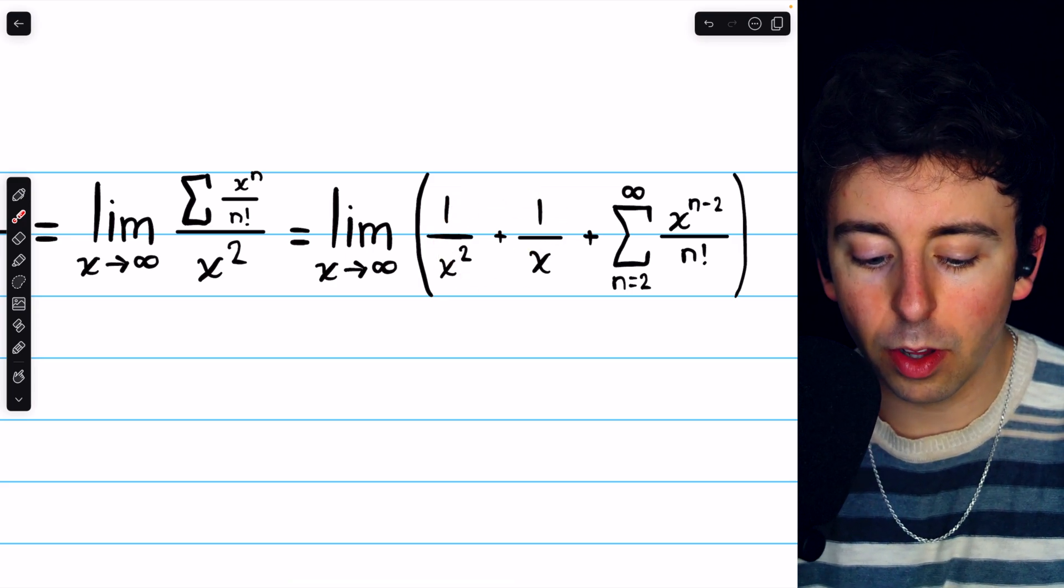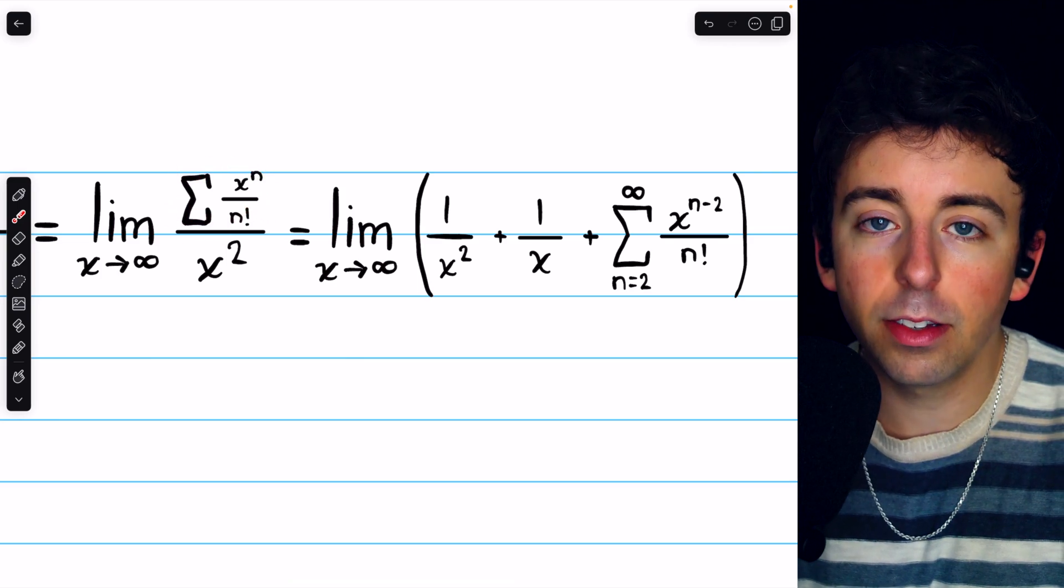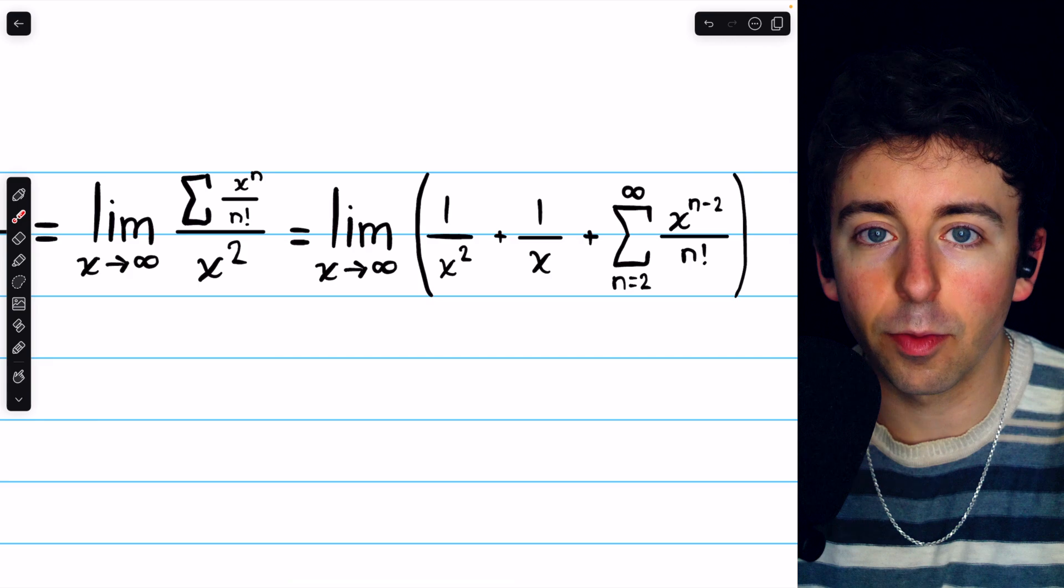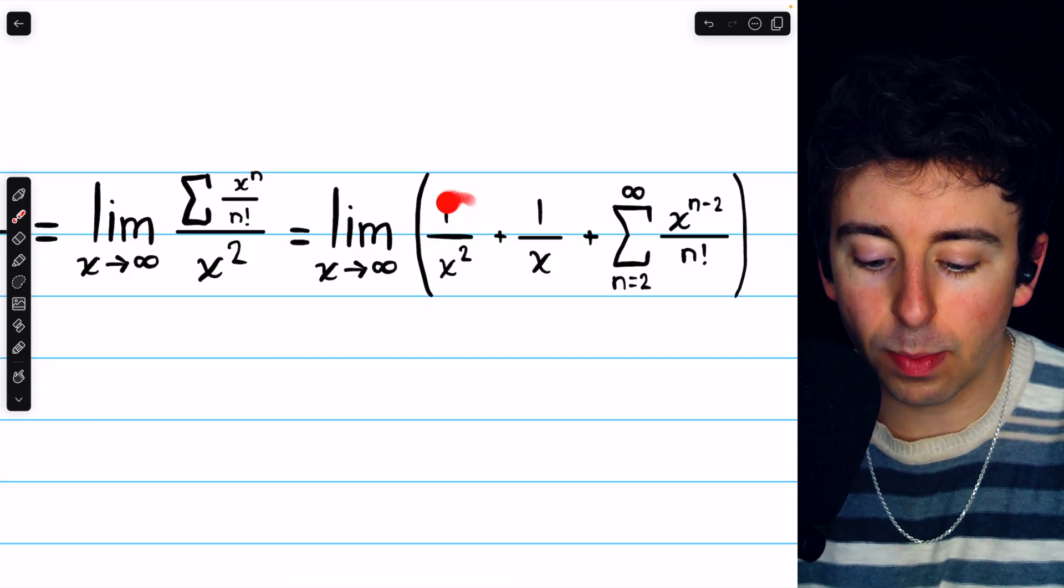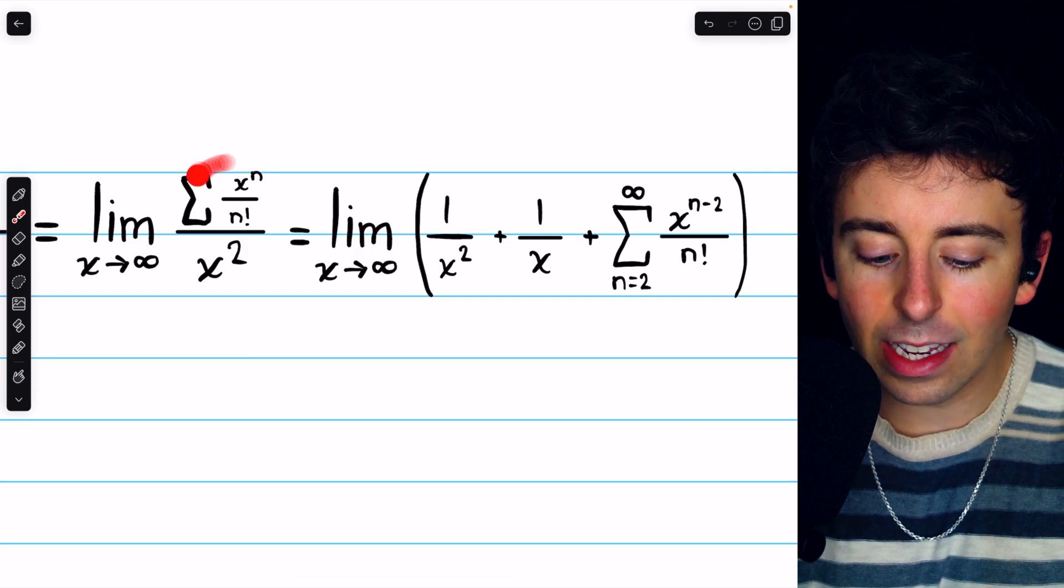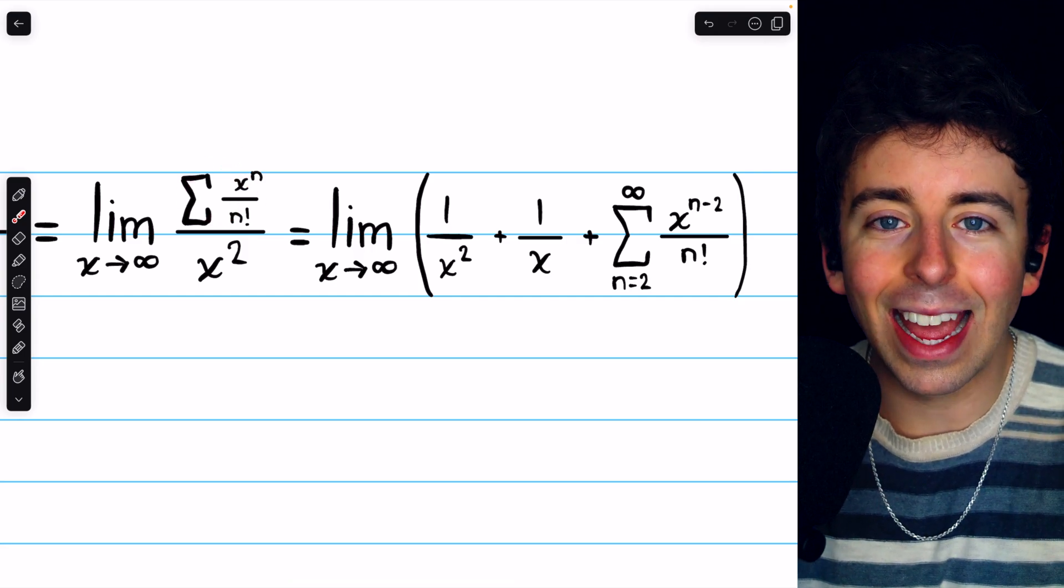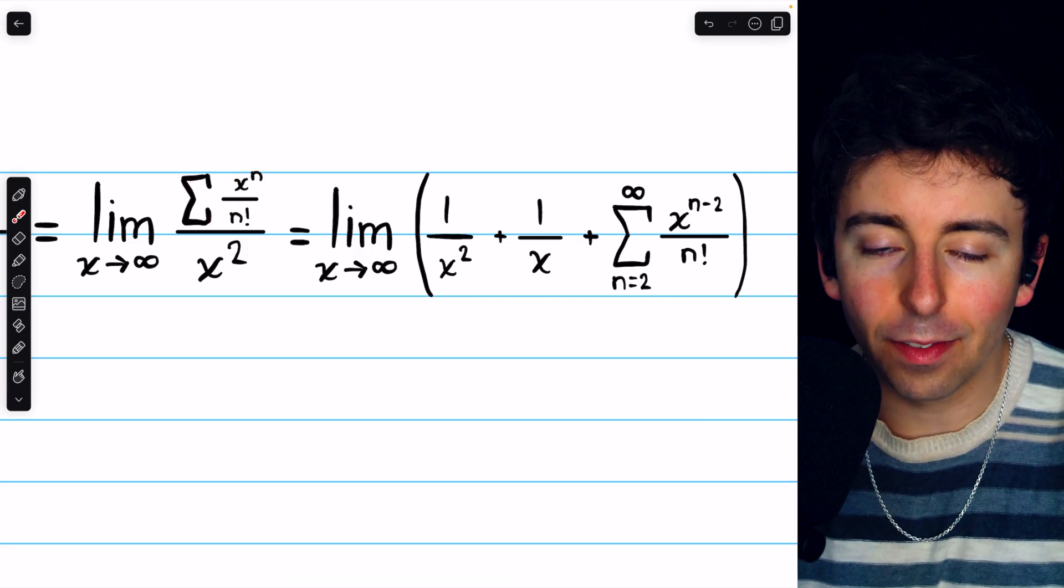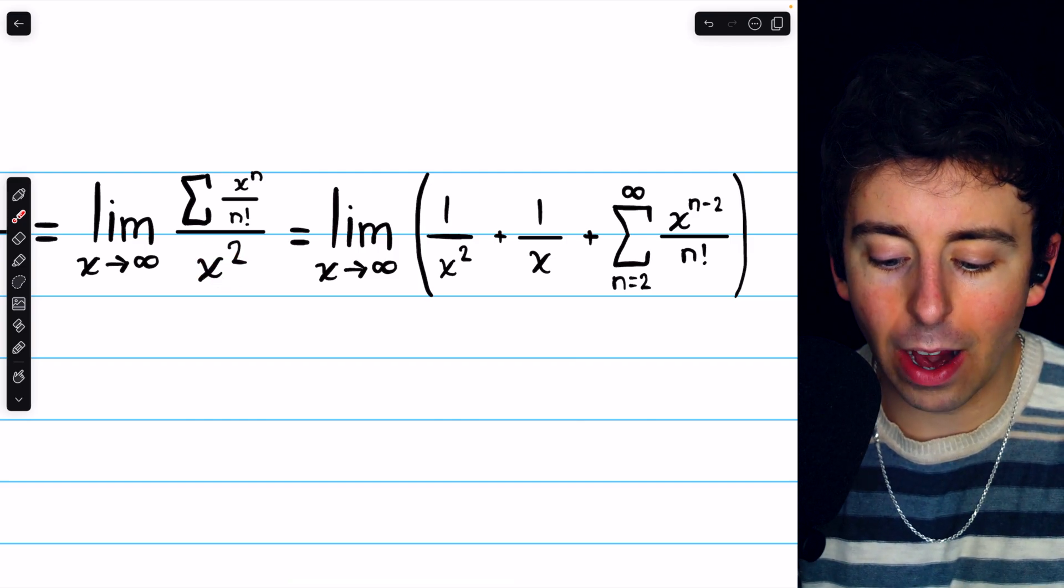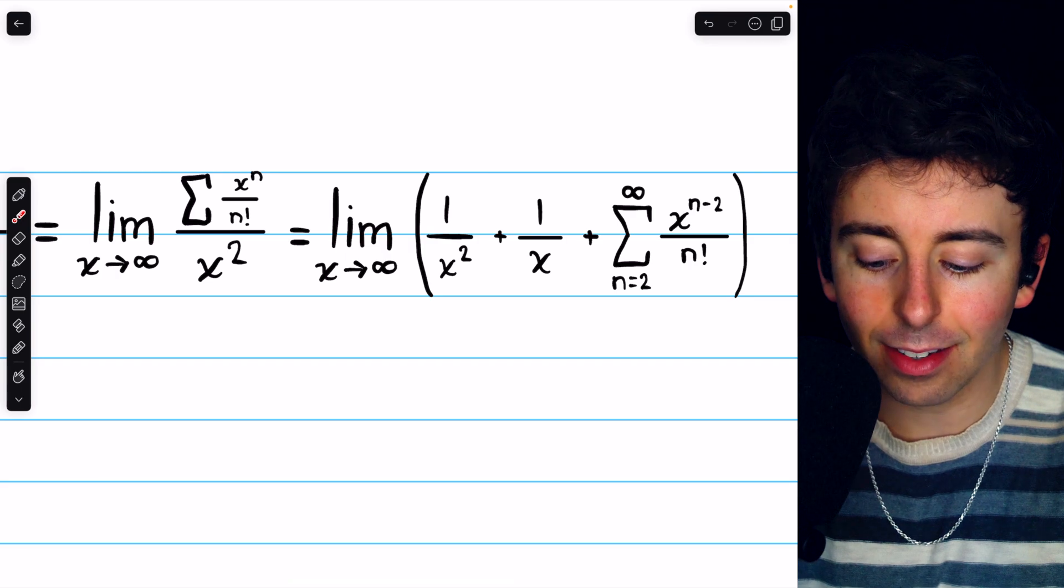So for example, the first term of this series is when n equals 0, and we have 1 as the first term, which would end up just being 1 over x squared after that division. The second term of this series is when n equals 1. That gives us x divided by 1. Once we divide it by x squared, we just get 1 divided by x.